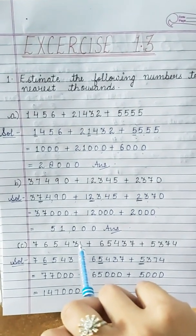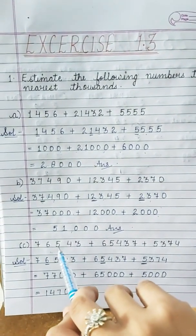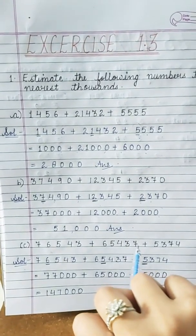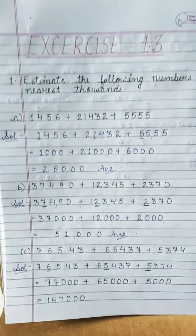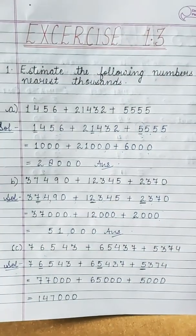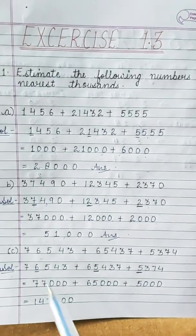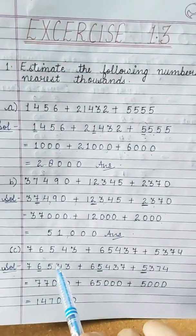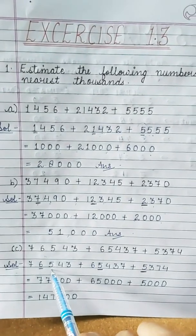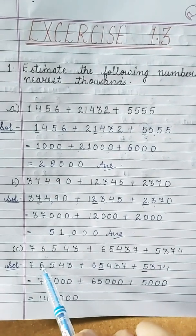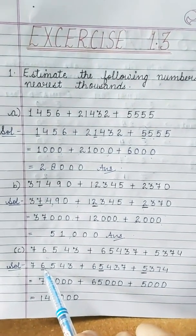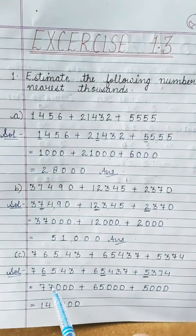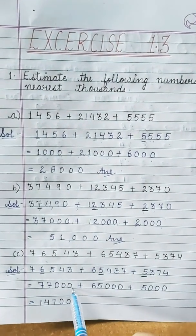Part C is 76543 plus 65437 plus 5374. Underline the digit at the thousands place, then observe the digit after it. For 76543, the digit after 6 is 5 — equal to 5 — so 6 is increased by 1 to become 7, and 543 is replaced by 0, giving 77000. For 65437, observe 4 — less than 5 — so 5 remains as is and the remaining digits become 0, giving 65000.